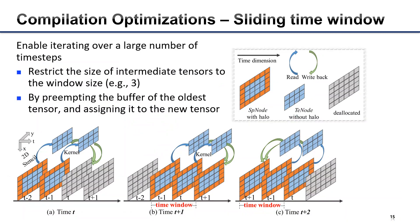Due to the limited memory space, we implement a sliding time window to enable iterating over a large number of time steps. It restricts the size of intermediate tensors to the time window by pre-empting the buffer of the oldest intermediate tensor and assigning it to the new tensor.